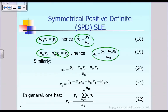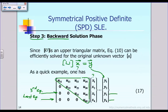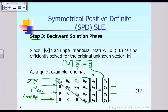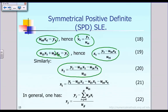Similarly, after solving for x3, we look at the second equation: 0 times x1 plus u22 times x2 plus u23 times x3 plus u24 times x4 equal to y2. From that we get equation 20 and solve for x2. Then looking at the first equation: u11 times x1 plus u12 times x2 plus u13 times x3 plus u14 times x4 equals y1. From that first equation we solve for x1, as indicated by equation 21.